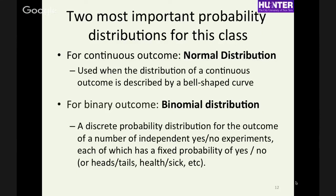If you have everyone in this room flip their coin a thousand times and plot the number of times it comes up heads for each person, that distribution you plot is going to be a binomial distribution. So even though it's describing a binary variable, it's still discrete — or, if it's a large enough number of trials, a continuous-like distribution.